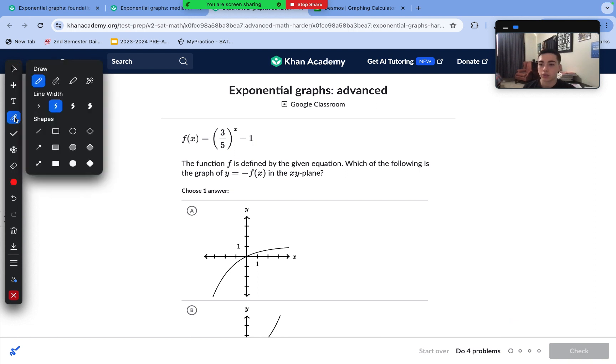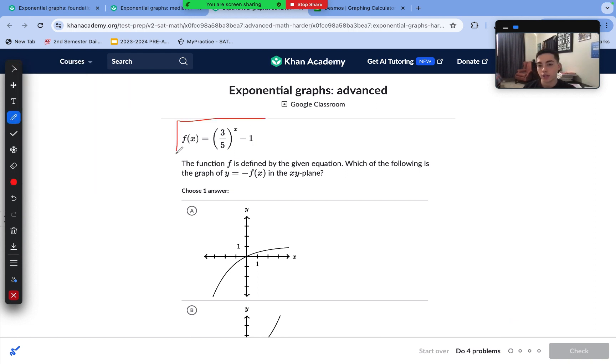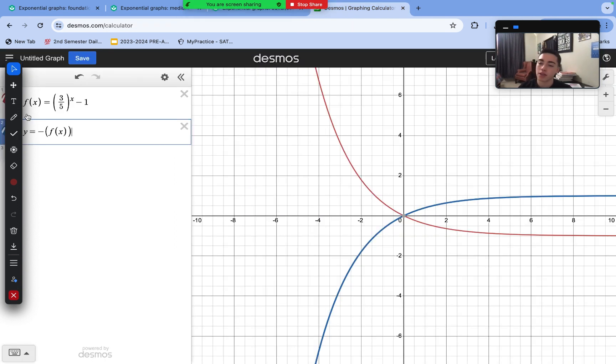Now onto our advanced difficulty level. We are given this equation, and we are trying to find the graph of y equals negative f(x). The easiest way to do this, in my opinion, instead of having to remember different transformations and what they look like in the graph, is to simply graph f(x) into Desmos, and then manually input y equals negative f(x), and you'll see the answer. We can see clearly here when substituting in everything that the question provided us, that this blue graph is what our answer is going to look like.